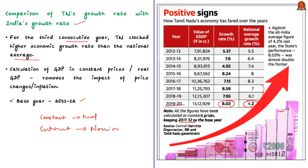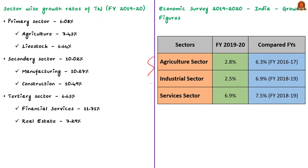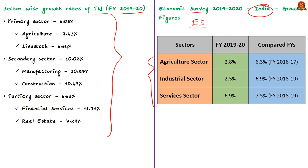The calculation of GDP at constant prices is known as real GDP, and GDP in terms of current prices is known as nominal GDP. Real GDP removes the impact of price fluctuations. From the news article, we can say that all three sectors — primary, secondary, and tertiary — have performed well in the state of Tamil Nadu during 2019-20 as compared to national statistics. As per the economic survey 2019-20, the growth rate of the agriculture sector at national level has been fluctuating and actually decreased from 6.3% in 2016-17 to about 2.8% in 2019-20, and the estimated overall industrial sector growth for 2019-20 was about 2.5% compared to 6.9% growth in 2018-19.